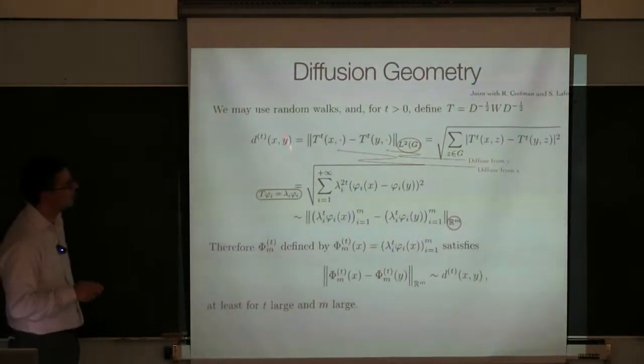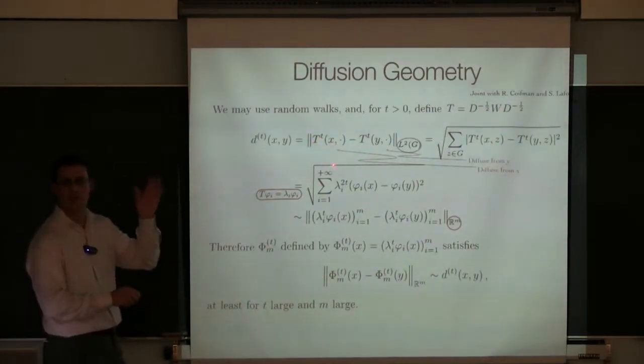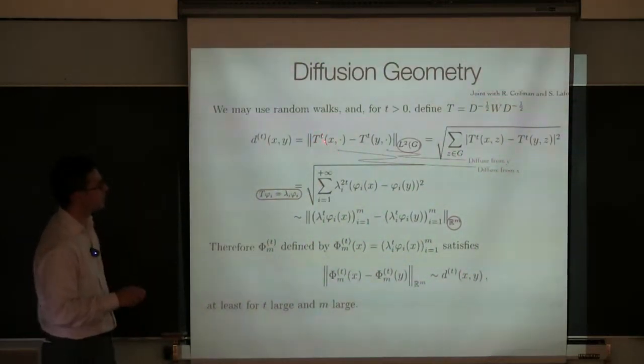So you can define a distance which we call diffusion distance. It's in fact a family of distance parameterized by time. So if you have two points on your graph, the diffusion distance between x and y at time t is the following. So you start at x, you run a random walk. This t is, think of it as a random walk, it's a symmetrized version thereof.